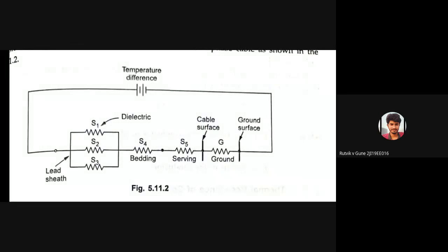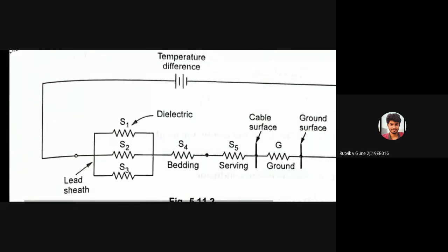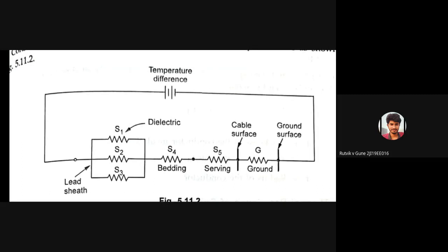In the equivalent circuit, capital S1, S2, S3, S4, and S5 are all thermal resistances. Temperature difference is represented in the form of a battery. S1, S2, S3 are the thermal resistances of the three dielectric parts in parallel; S4 is the thermal resistance of the bedding; S5 is the thermal resistance of the serving; and G is the thermal resistance of the ground.